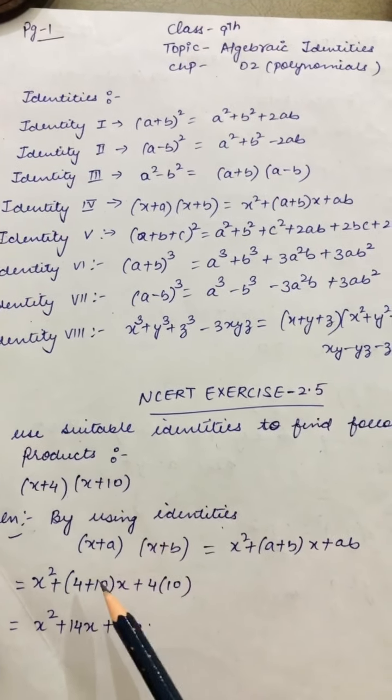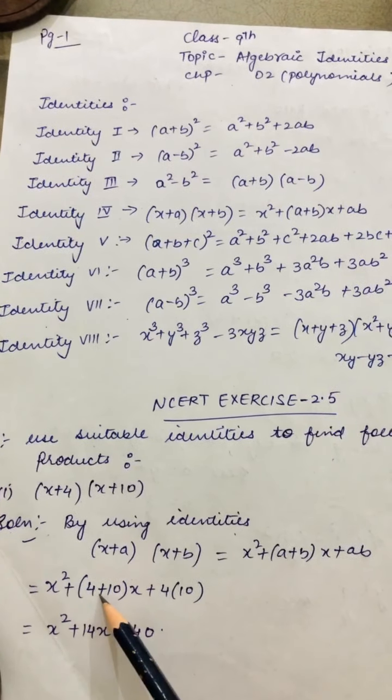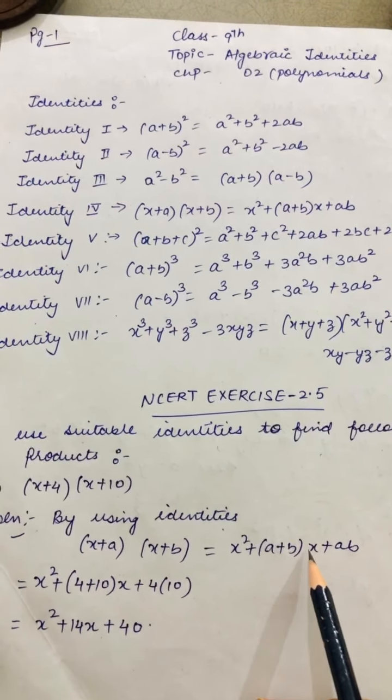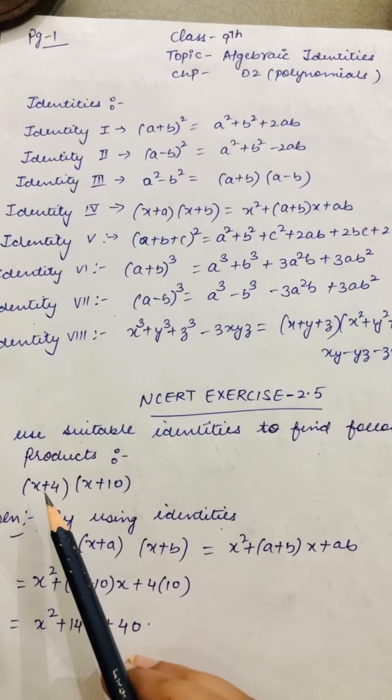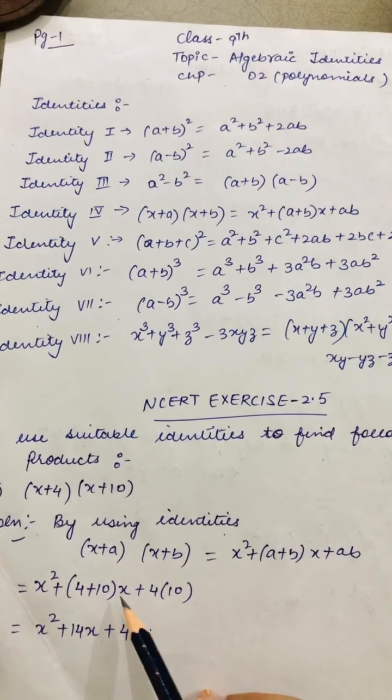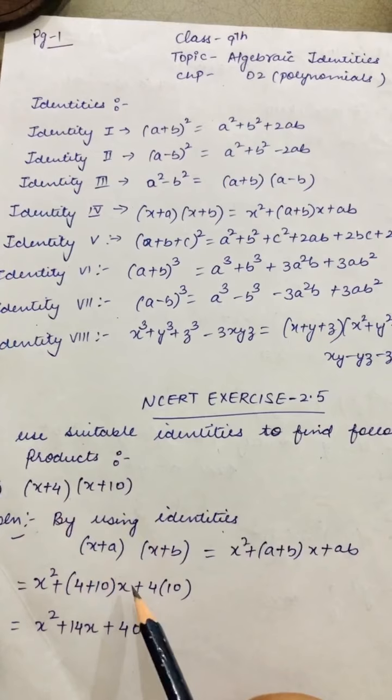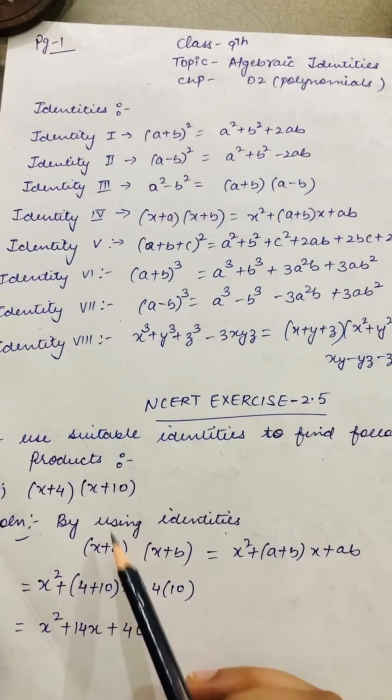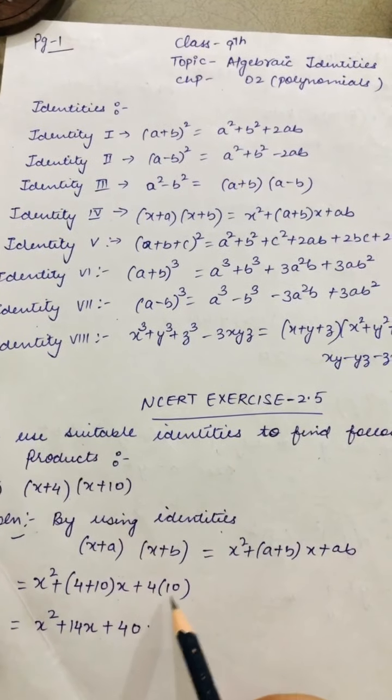So x is same, x² will come. What is a? A is 4. What is b? B is 10. 4 plus 10, and with it, what x is there? Your x is also there, so you will also write x. If there was 2x here, then 2x would come there also. Whatever x is there, it will come as is.